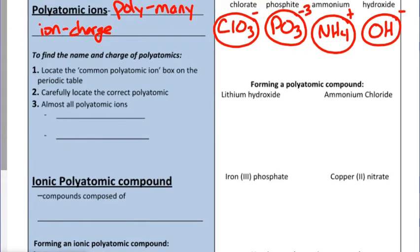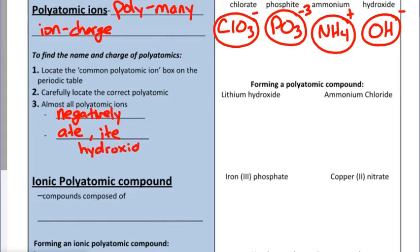We always locate the polyatomic ion box in the periodic table anytime we hear -ate or -ite, and especially when we see multiple elements in a formula. Anytime we see more than two capital letters, that indicates multiple atoms, so polyatomics are involved. Almost all polyatomic ions are negatively charged — except ammonium — and almost all end in -ate or -ite, except for hydroxide and cyanide. The cyanide ion is a carbon and nitrogen atom bonded together with a negative one charge.